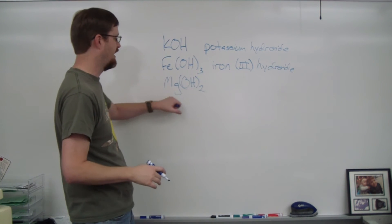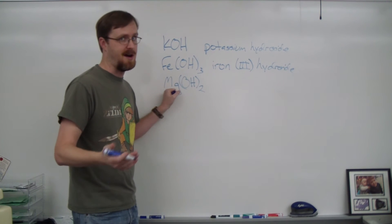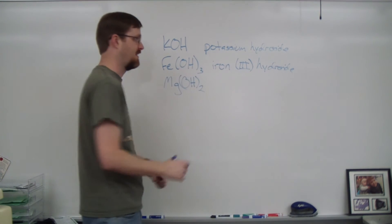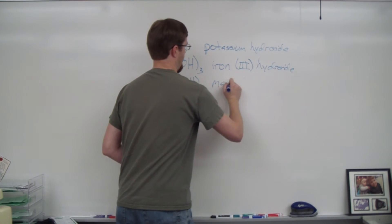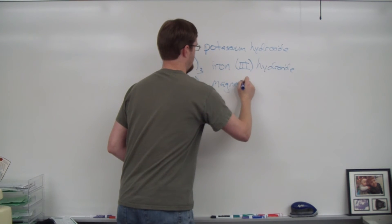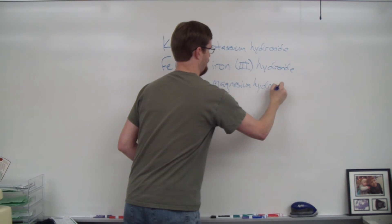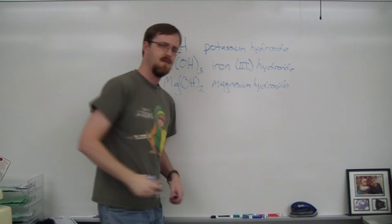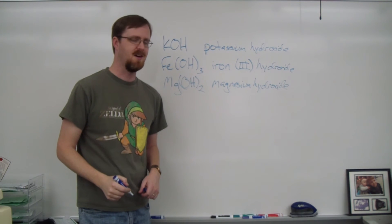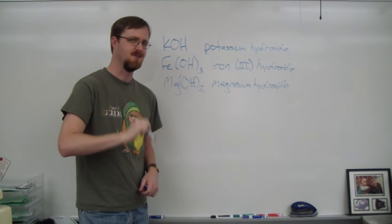Last example here, MgOH2. Mg is magnesium, which is not a transition metal. So I'm just going to write the name as it is. Magnesium hydroxide. All right. So now I'm going to reset one more time and we're going to go the other direction.